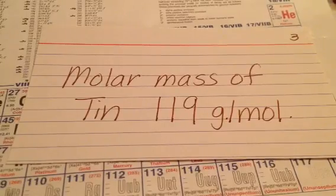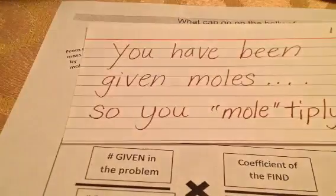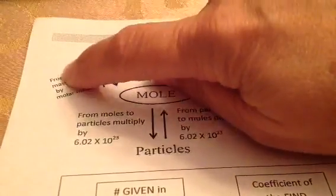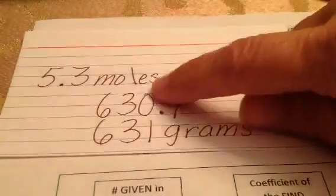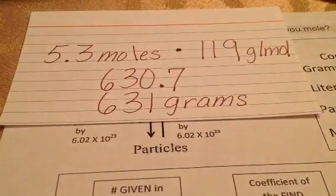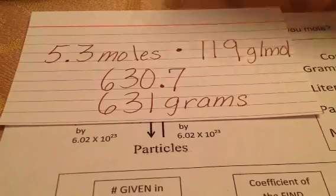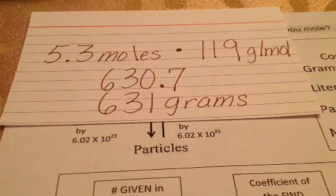To do that, I'm going to multiply by my molar mass, following the arrow from moles to mass. I was given 5.3 moles, and I multiply that by 119 grams per mole, and I get 630.7, which rounds to 631 grams. So the answer is: there are 631 grams in 5.3 moles of tin.